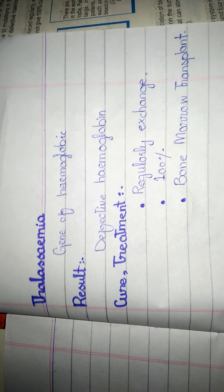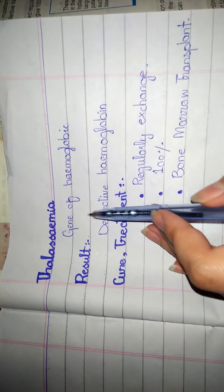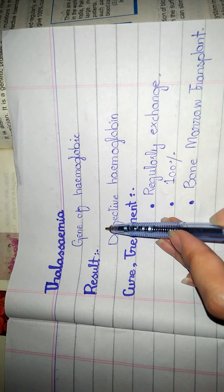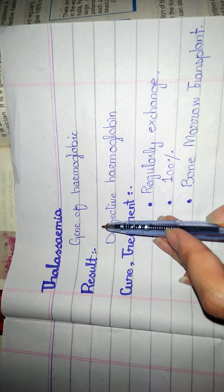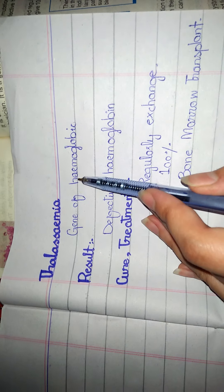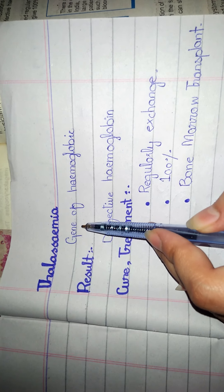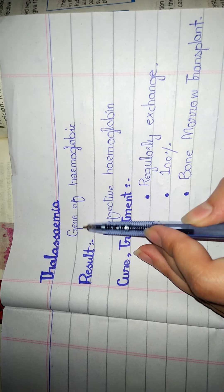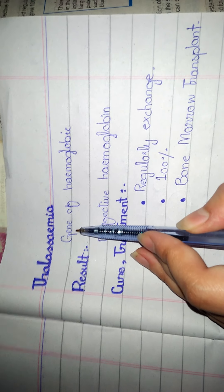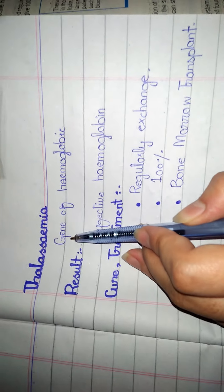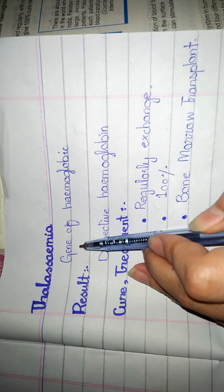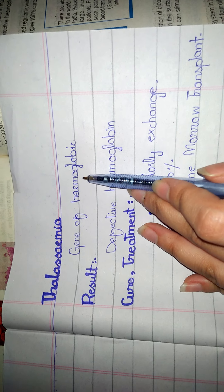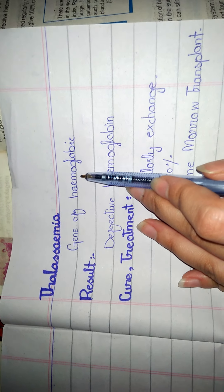Thalassemia is called anemia — the name comes from 'thalassa', referring to the sea. It is a form of anemia related to that name.